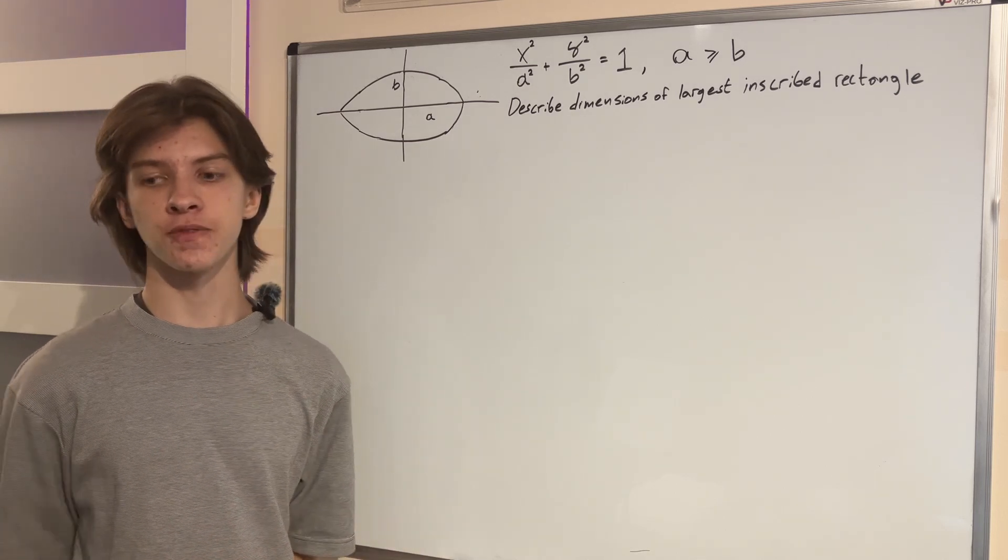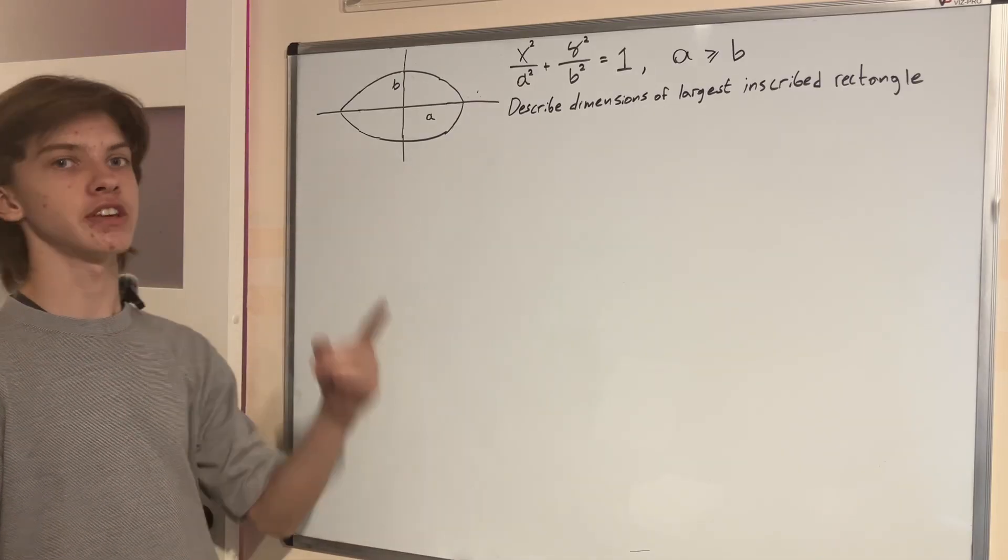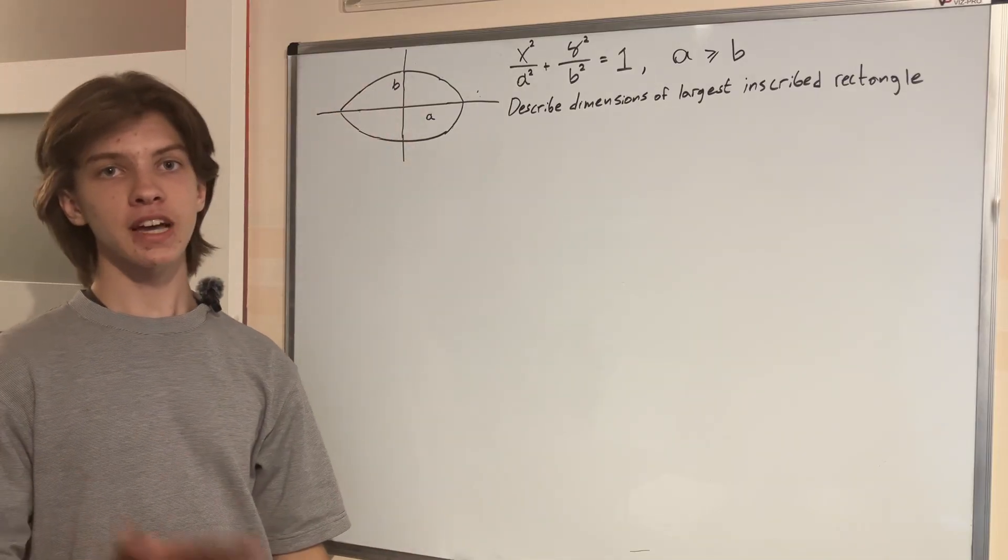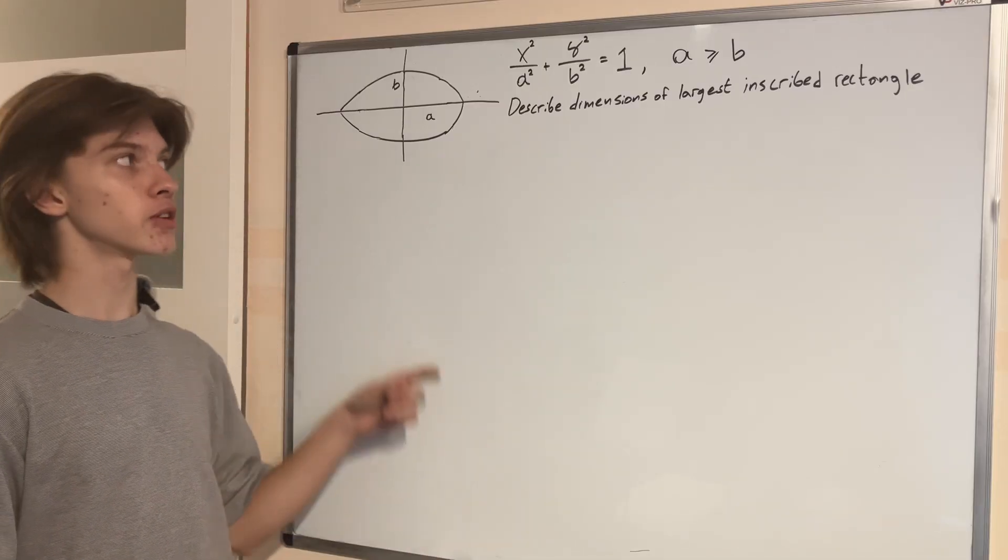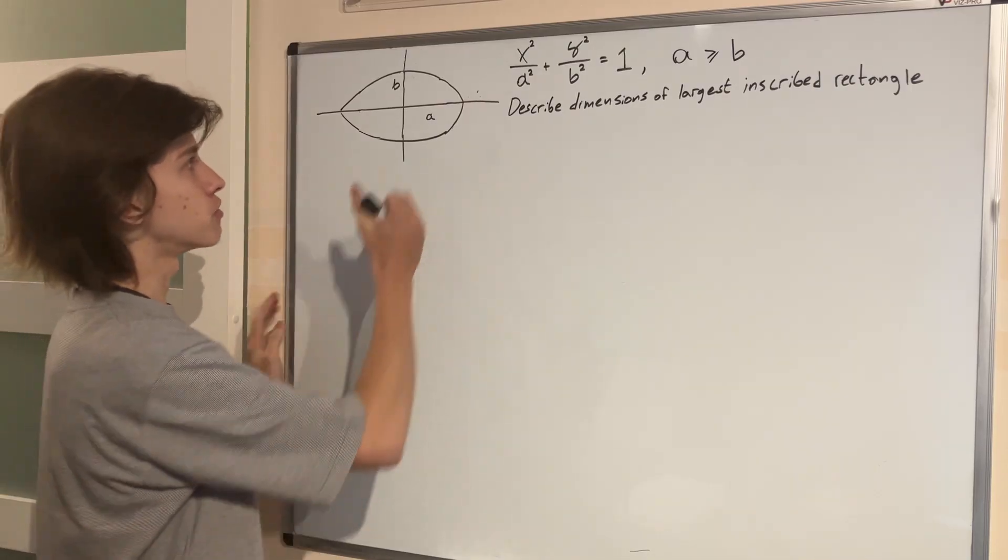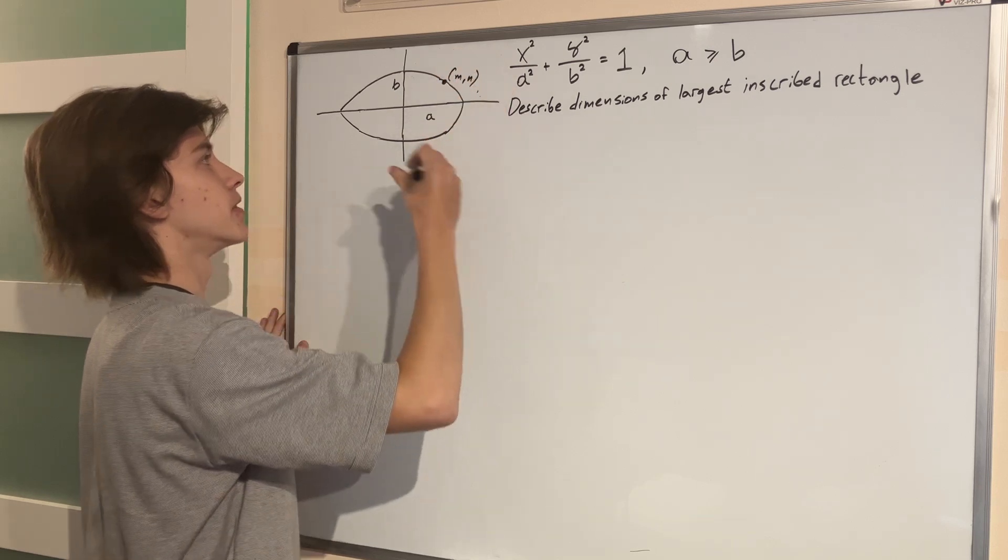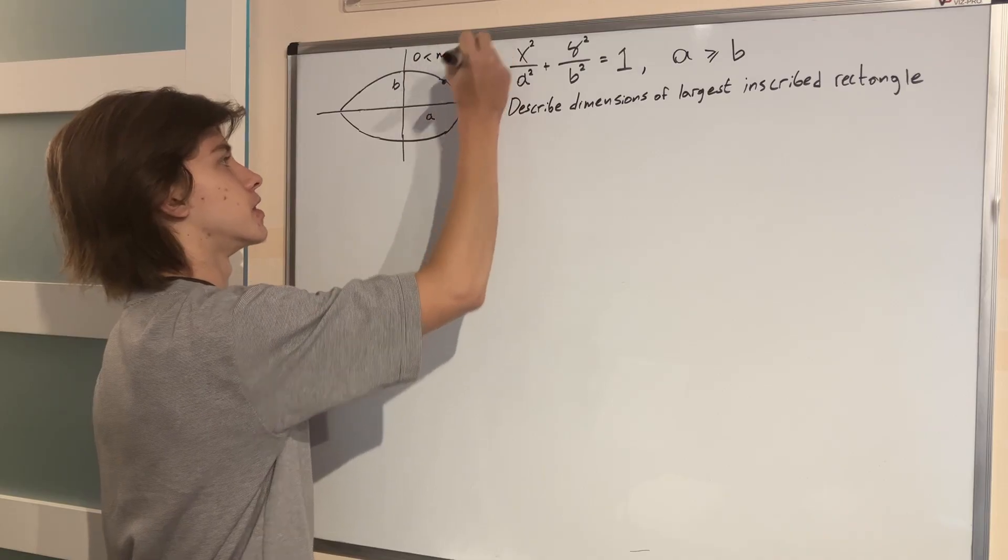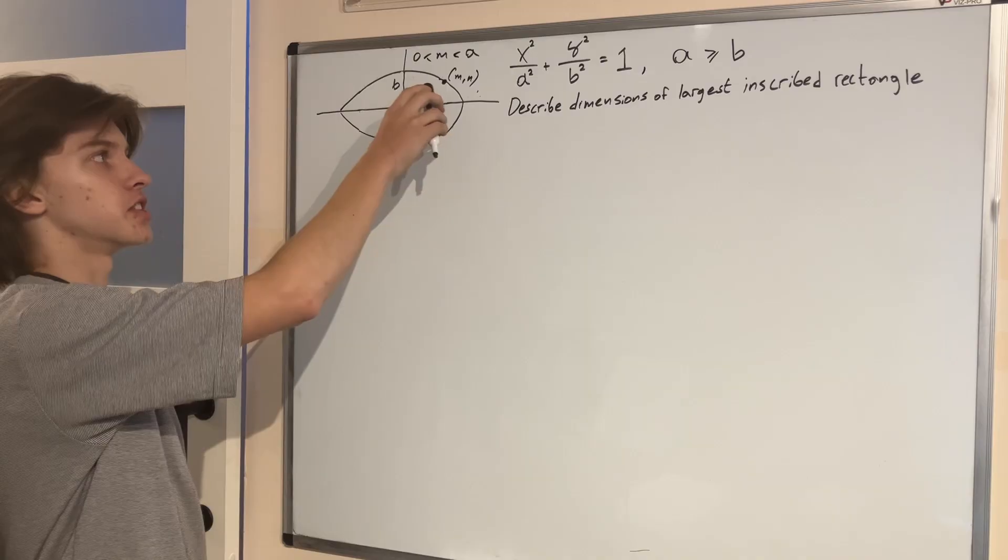But with that out of the way, let us first understand how much information we actually need to inscribe a rectangle in an ellipse. Well of course this rectangle will have four vertices that will all lie on the ellipse, but as you're about to see we only need to know the location of one of the vertices in order to figure out where the other three will be. Check this out, let's put a vertex of the rectangle right here somewhere on the ellipse and call it, label it with the point M, N. And let's have this M in between zero and the major axis of the ellipse, or A.